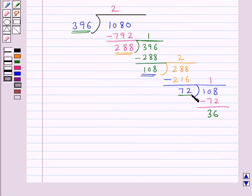Now the divisor 72 is divided by the remainder 36 and we know 36 two times is 72 and we get the remainder as 0.